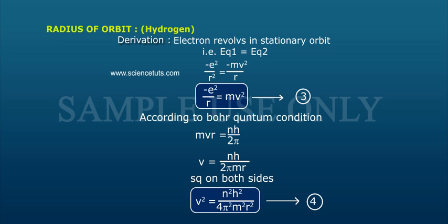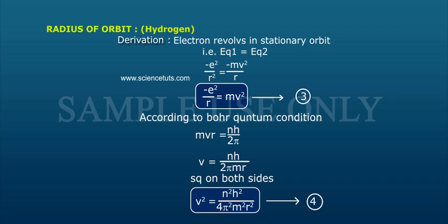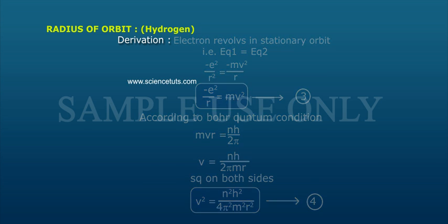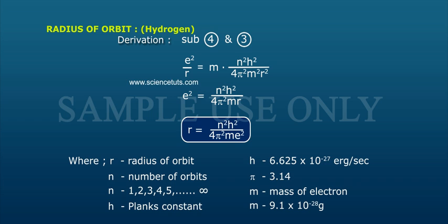From the quantum condition mvr equals nh by 2 pi, bring mr down to get v equals nh by 2 pi mr. Squaring both sides gives v squared equals n squared h squared by 4 pi squared m squared r squared — equation four. Substitute equation four into equation three: e squared by r equals m times n squared h squared by 4 pi squared m squared r squared.